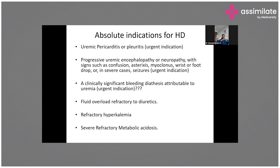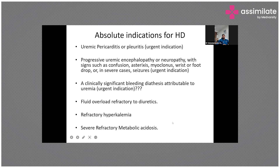Now let us look at the indications for dialysis. There are emergency and non-emergency indications. Emergency indications include hyperkalemia, fluid overload not responding to treatment, severe metabolic acidosis, uremic encephalopathy — which can present as simple confusion, myoclonic jerks, involuntary movements, or foot drop — uremic pericarditis, and uremic bleeding. Non-emergency indications include uremic symptoms such as persistent nausea, persistent vomiting, and severe anorexia.